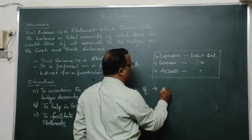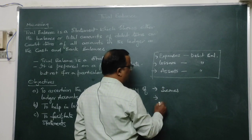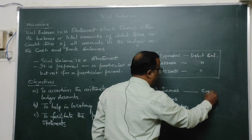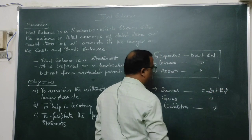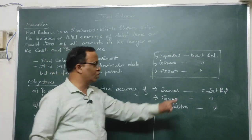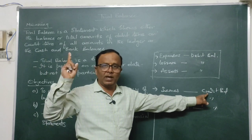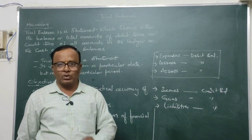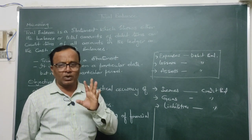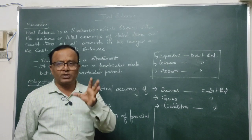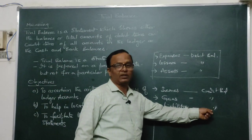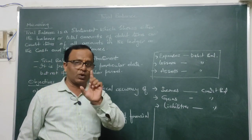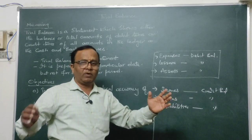Similarly, all income accounts, all gain accounts, and all liability accounts should show credit balance. For example, interest received account is an income, so it shows credit balance. Rent received account is also an income. Any liability — such as creditors account, capital account, reserves account, bills payable account, and outstanding expenses account — will show credit balance. This concept must be clear in your mind: what accounts show debit balance and what accounts show credit balance.